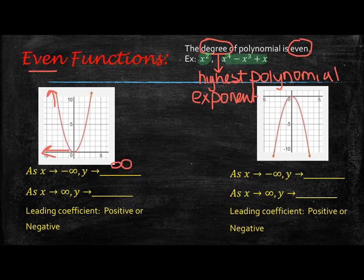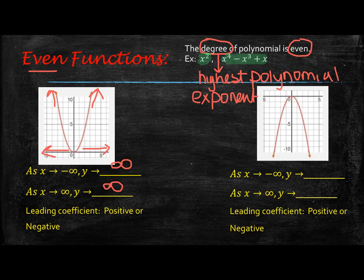As x approaches positive infinity, so as x increases, y is increasing as well. Something you'll recognize is that when you have even functions, the ends are going to be doing the same thing. If they're both going up, it's an even function. If they're both going down, then it's an even function as well.